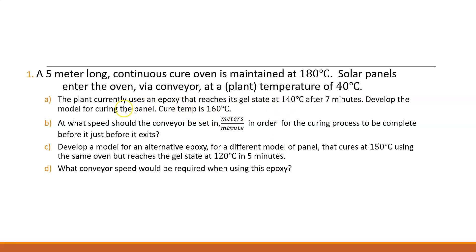The first one, you need to come up with a model. Then you need to come up with a time that's going to achieve it at 160 degrees. And use that time to set that speed based on five meters of travel. Then in the second question, you'll come up with another model based around the new epoxy and use that model to come up with a new conveyor speed based around the same conditions.